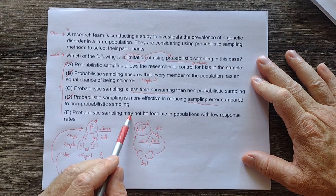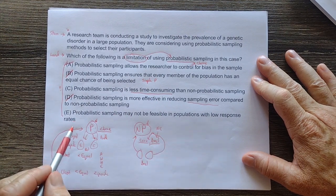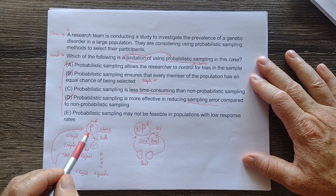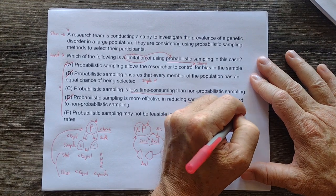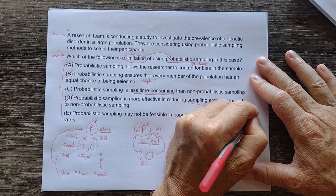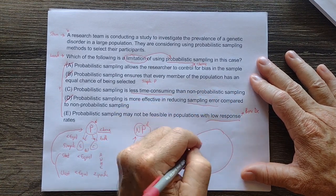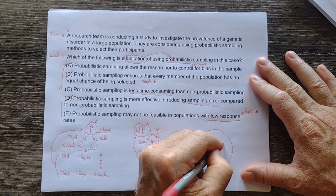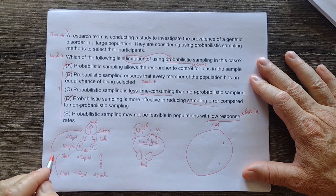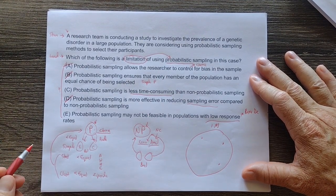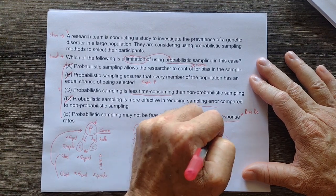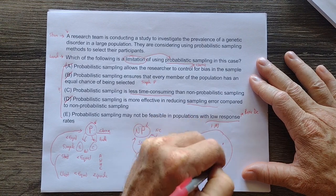So, probabilistic sampling may not be feasible in populations with low response rates. Actually, that can be a limitation. So what does it mean by low response rates? Really what it's talking about is another situation would be a rare disease. So if we had a population and we only had two people or three people in the entire population, and let's say we had one million people in that population and three people had the disease, probabilistic would be an issue because if each person, we had one million dots here, but only three people that had the disease.